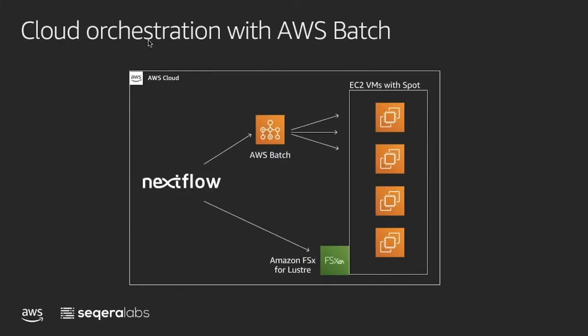With AWS Batch, each individual task is submitted to Batch via the API, and then Batch spins up the resources required for each of those individual tasks. In the first versions, Nextflow uses an S3 bucket so that input data is transferred to the virtual machine, back to the S3 bucket, and again. But recent support with Amazon FSx for Lustre enables users to have a mounted shared file system, which reduces transfer time and speeds up execution.